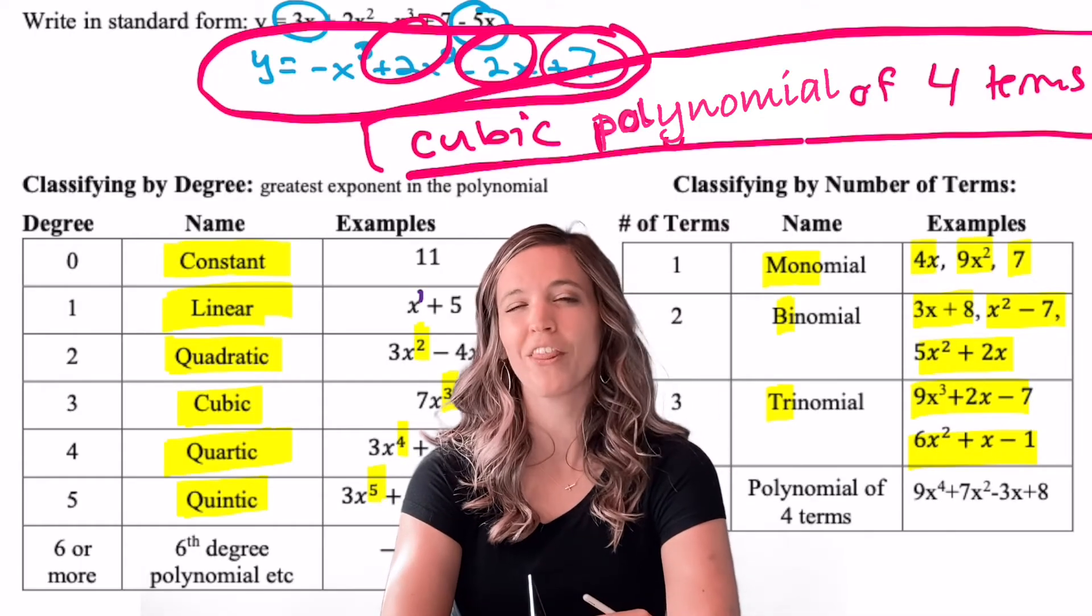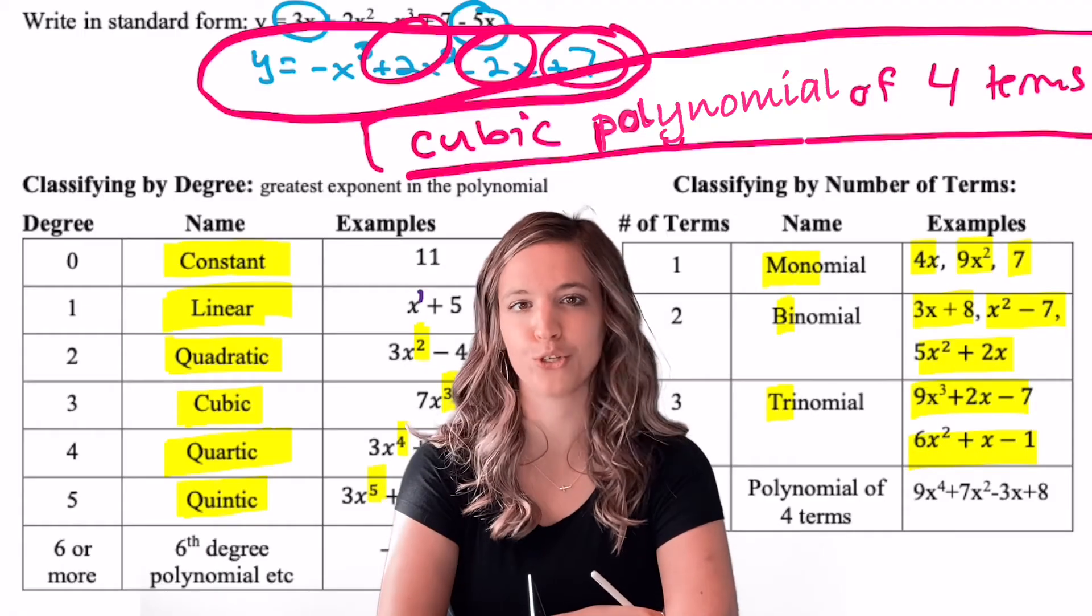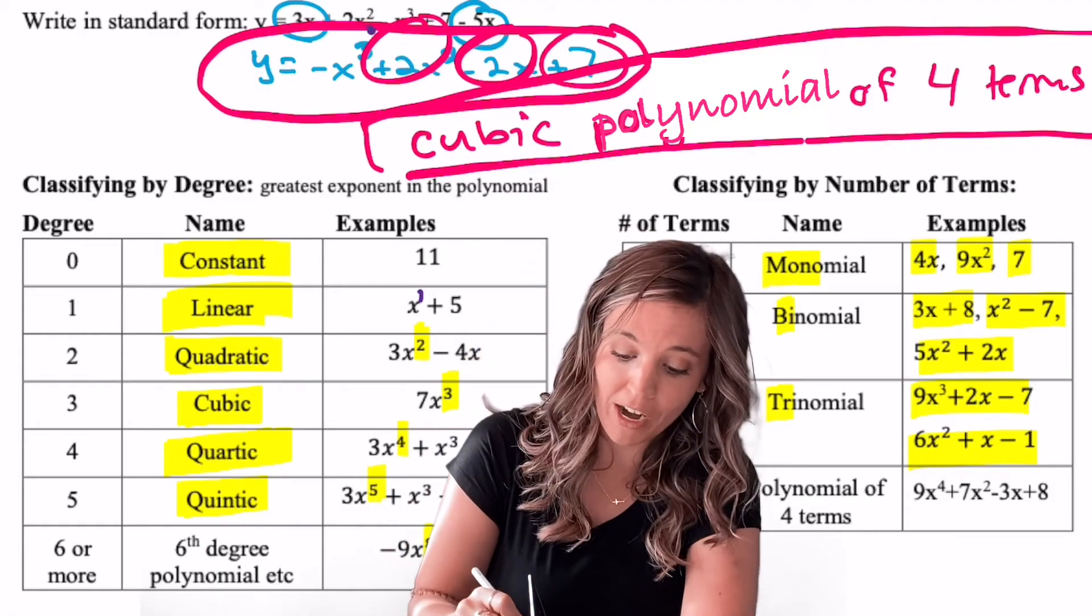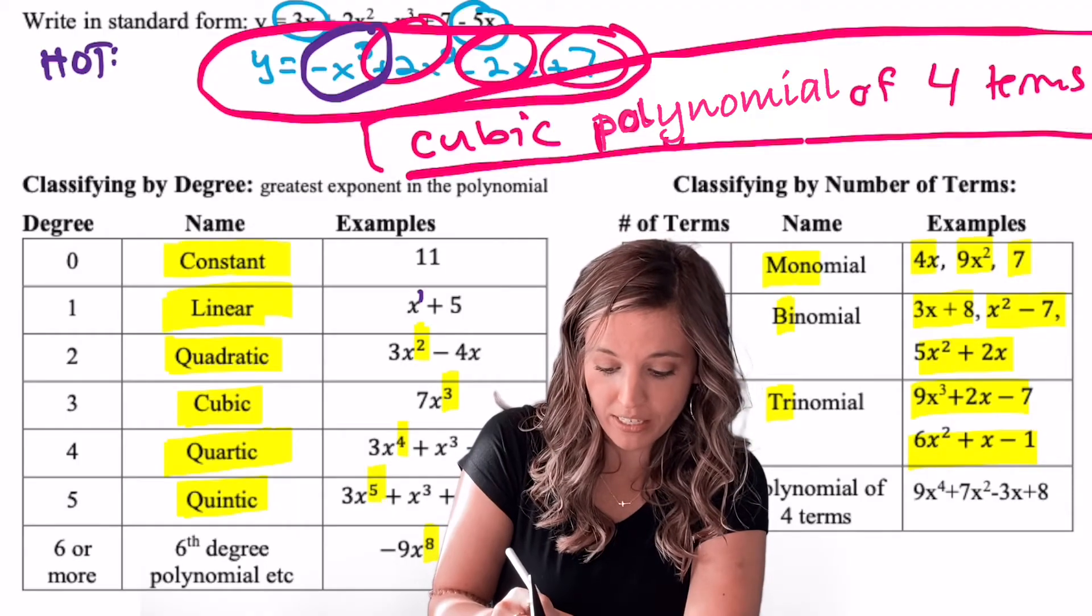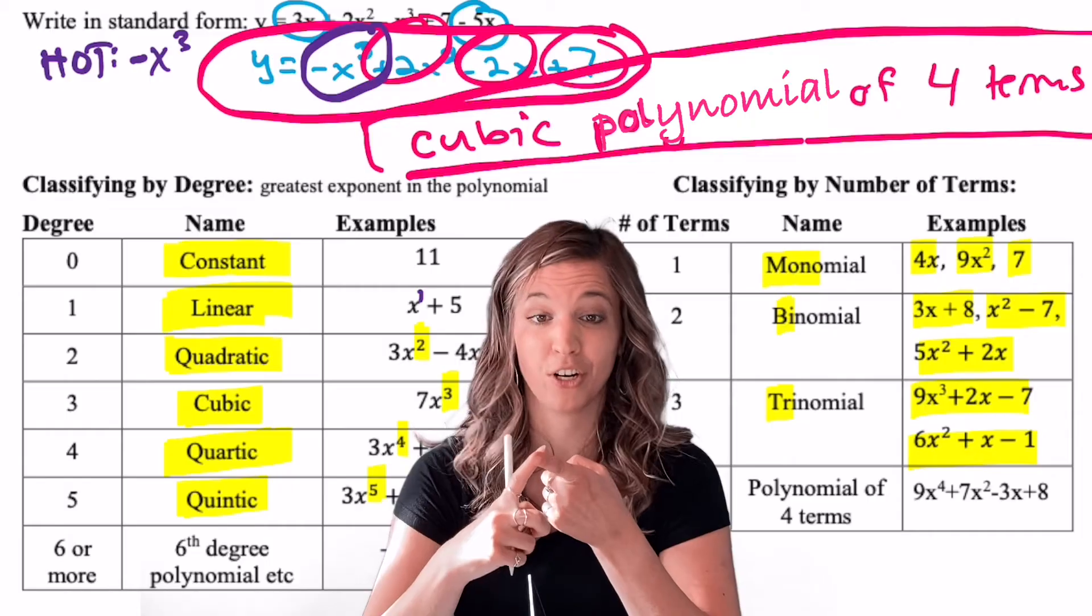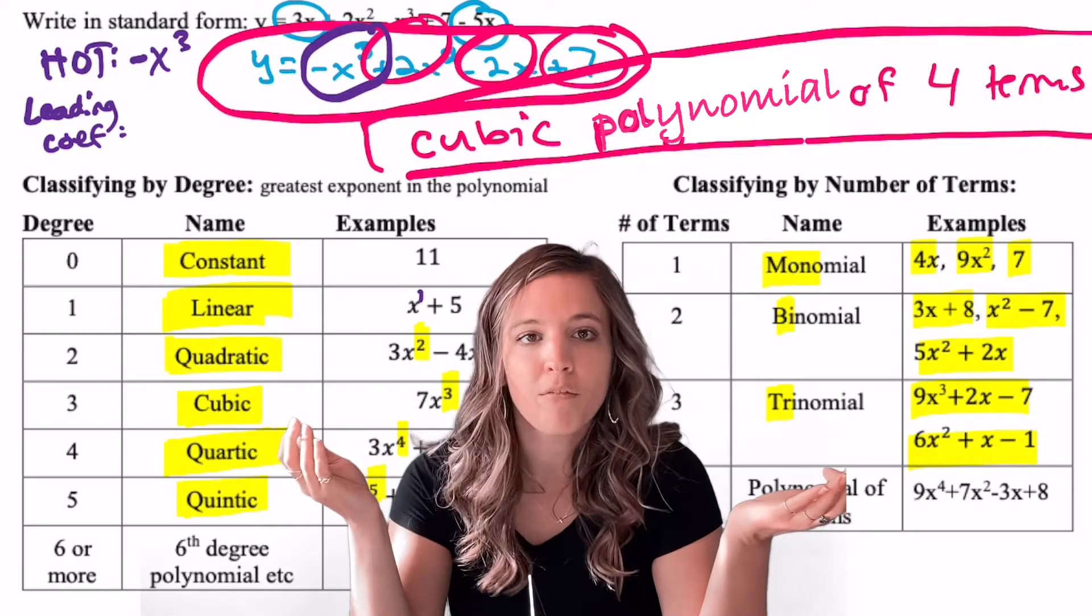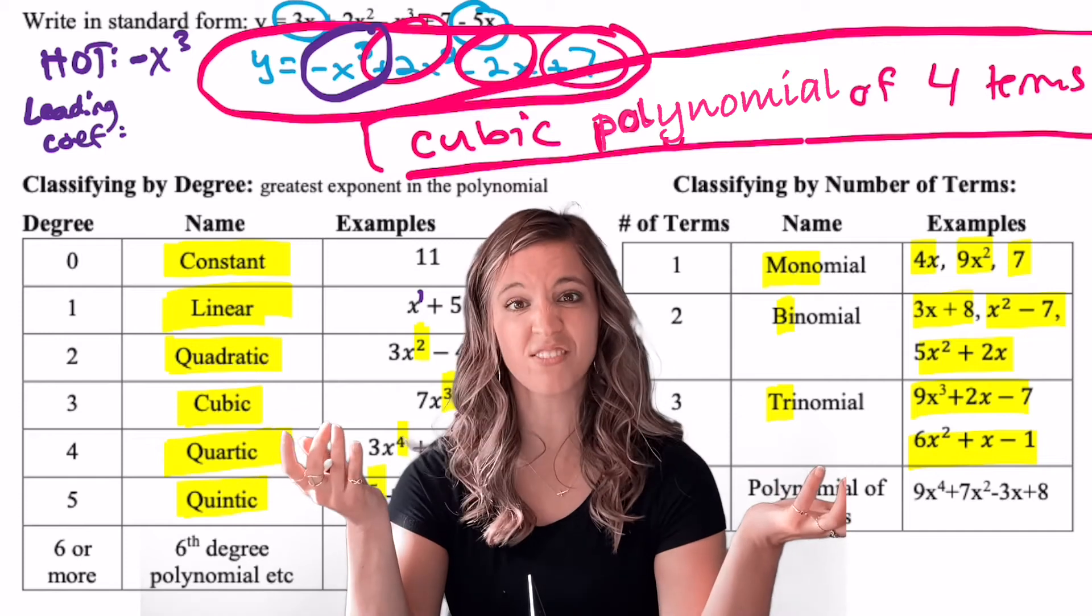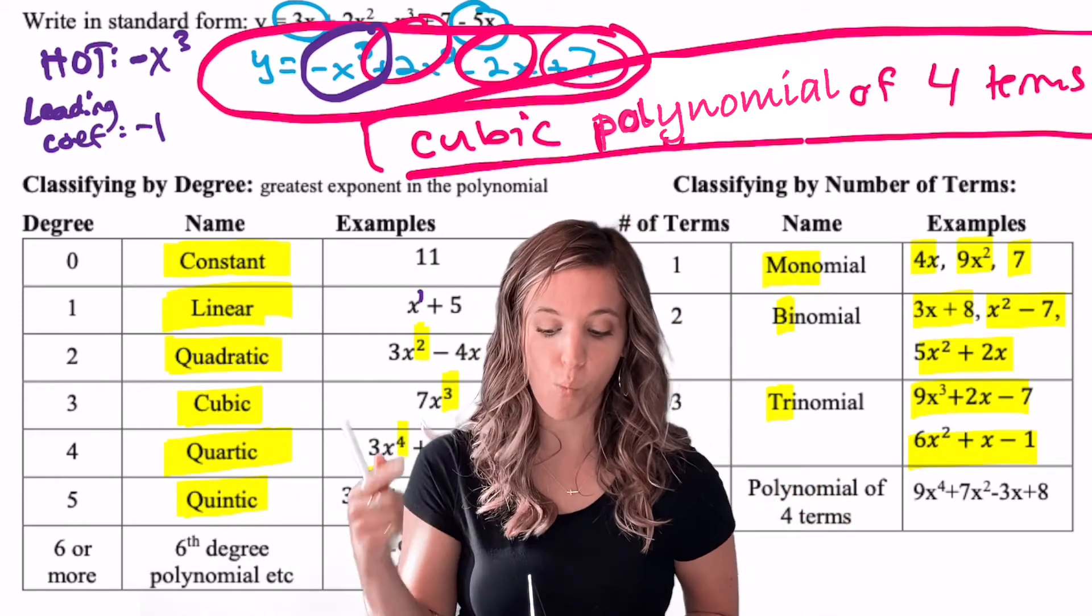Continuing to look at Mrs. Peart's example, there's a few other things I can tell from standard form. One being the highest order term - that's the very first term in our standard form polynomial. So my highest order term here is negative x cubed. I can tell my leading coefficient from that term. What's in front of my x cubed? A negative sign. So my leading coefficient is negative one.